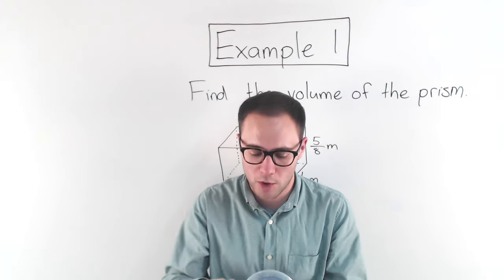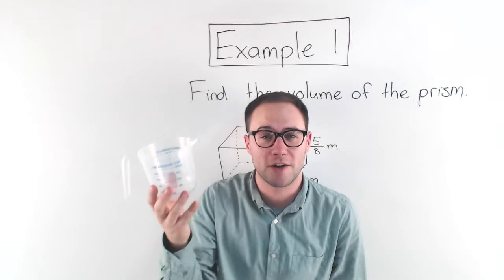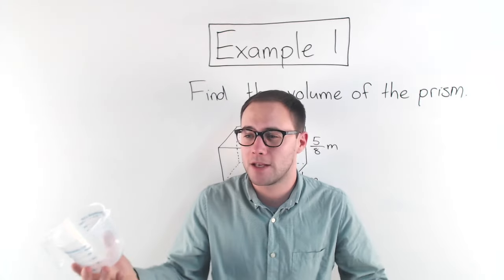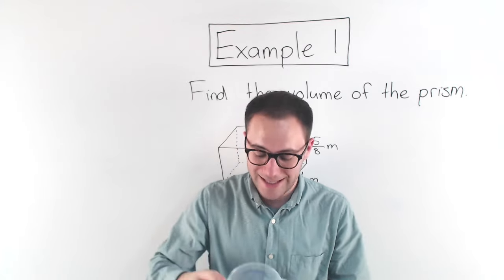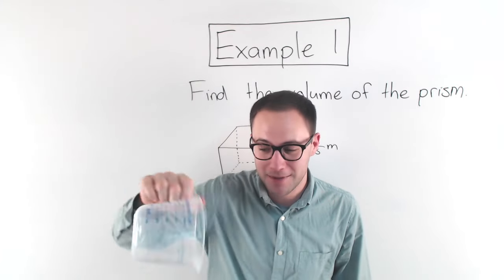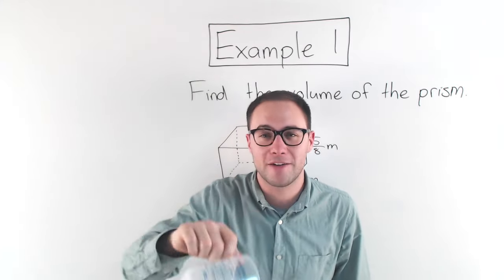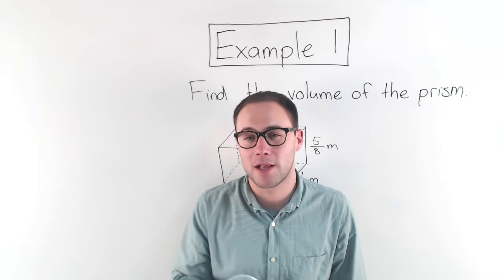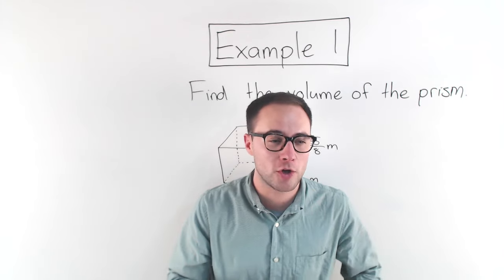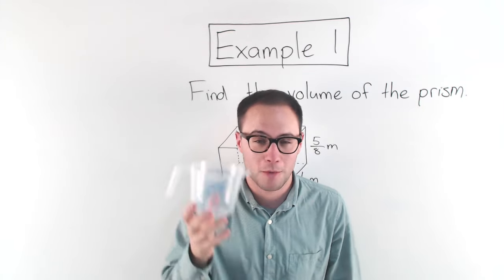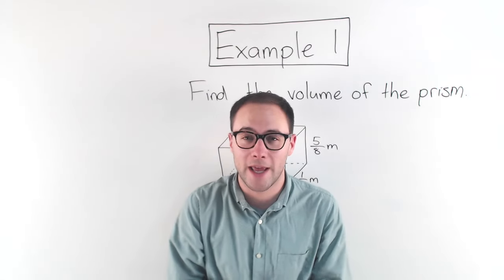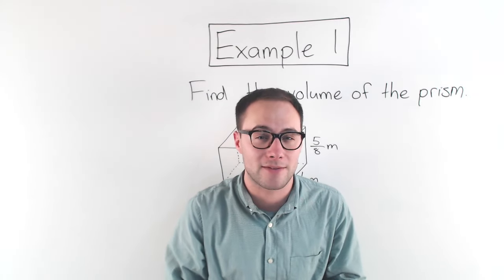But when we have something that's solid where we couldn't just pour in here and figure out how much is in there, it's more difficult. Or if you have something like a swimming pool, it would take a really long time to just do this with all the water and figure out the volume of that swimming pool. So instead, we have formulas that we can use to find the volume of things like that. Let's get to our first example and figure out how we can use math to find volume.